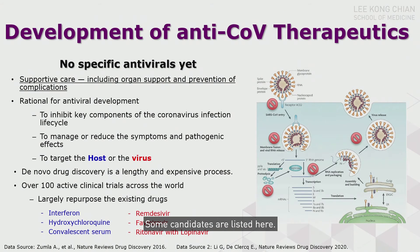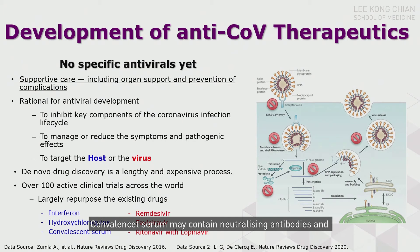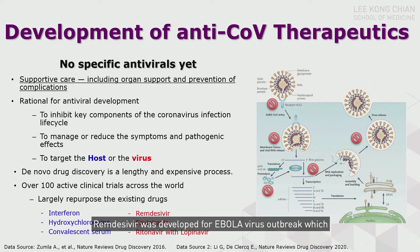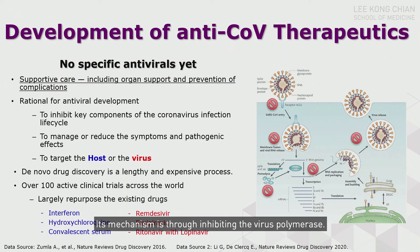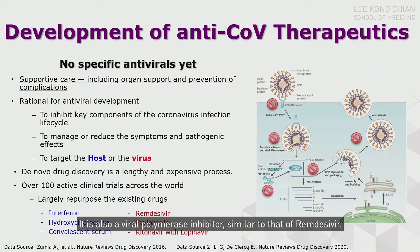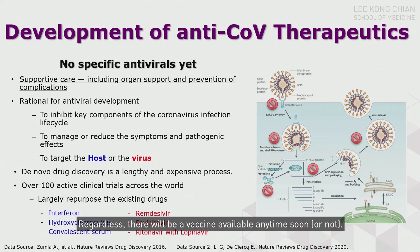Some drug candidates are listed here. Interferon and hydroxychloroquine are host immune modulators. Convalescent serum may contain neutralizing antibodies and antiviral immune modulators as well. Remdesivir was developed for the Ebola virus outbreak and turned out to be an effective antiviral candidate against coronavirus; its mechanism is through inhibiting the virus polymerase. Favipiravir is another approved influenza drug and is also a viral polymerase inhibitor, similar to Remdesivir. Let's hope that we will have some effective antivirals to treat COVID-19, and that a vaccine will be available soon.